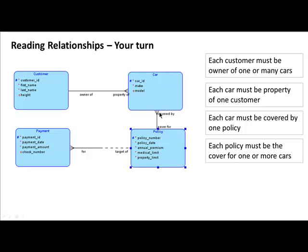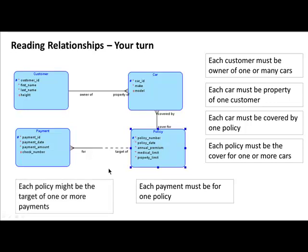For the last two relationships: 'each payment must be for one policy.' 'Each policy might be the target of one or more payments' — one or more because of the crowfoot, might be because of the dashed line, 'target of' being the relationship name. You can see how the entity relationship diagram communicates a lot of business rules and important information.